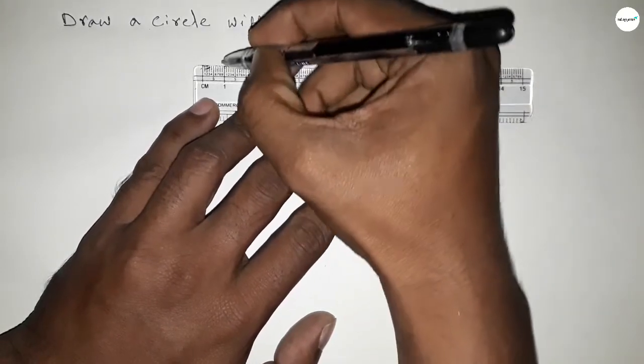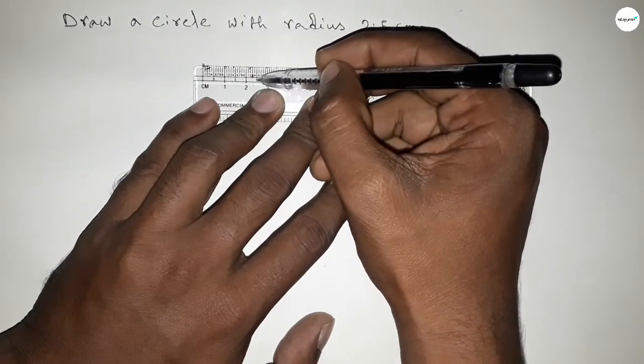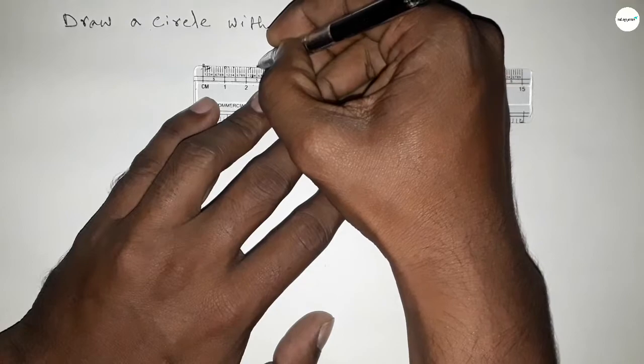So this is starting 0, 1, 2, and this is 2.5. So first drawing a line of length 2.5 centimeters.